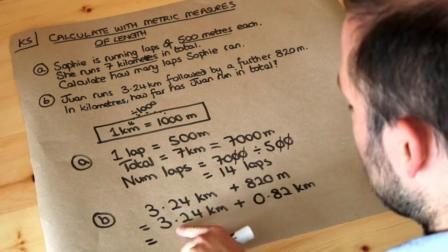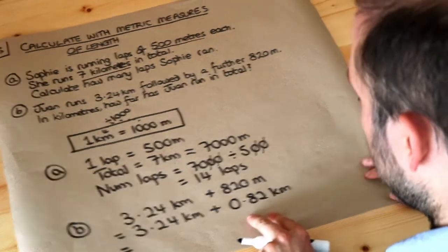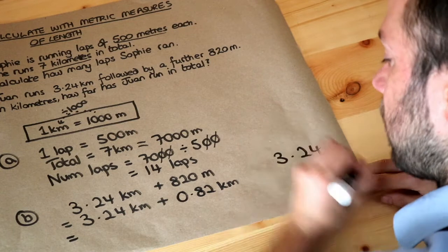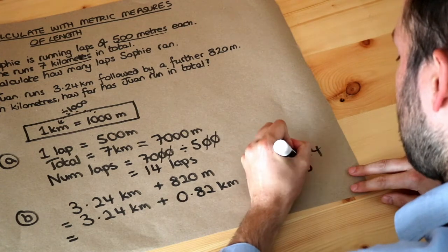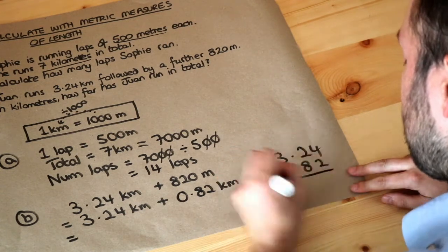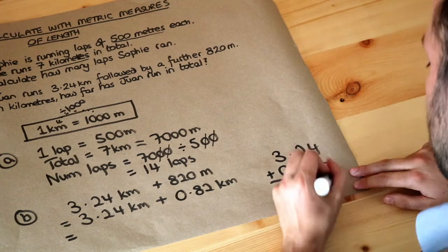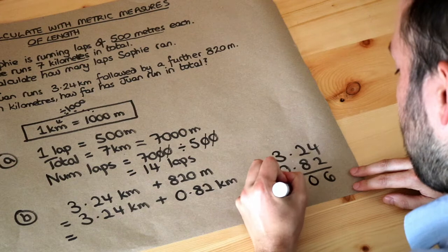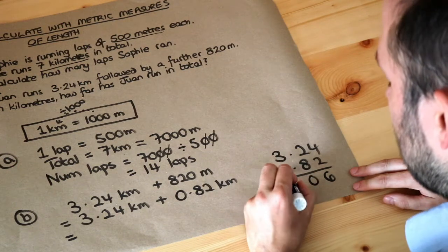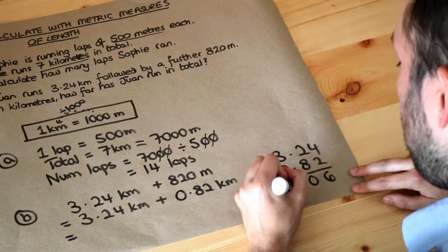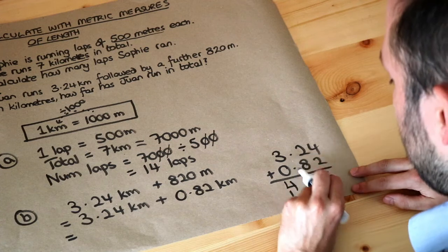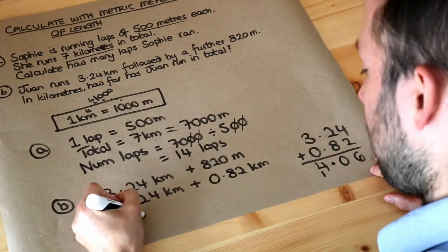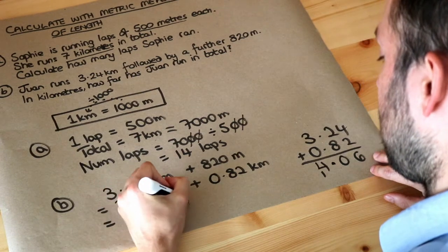Now we can add the two distances together using decimal addition: 3.24 kilometres plus 0.82 kilometres. 4 plus 2 is 6; 2 plus 8 is 10, so put 0 and carry the 1; 3 plus 0 plus the carried 1 is 4. Making sure to place the decimal point correctly, the answer is 4.06 kilometres in total.